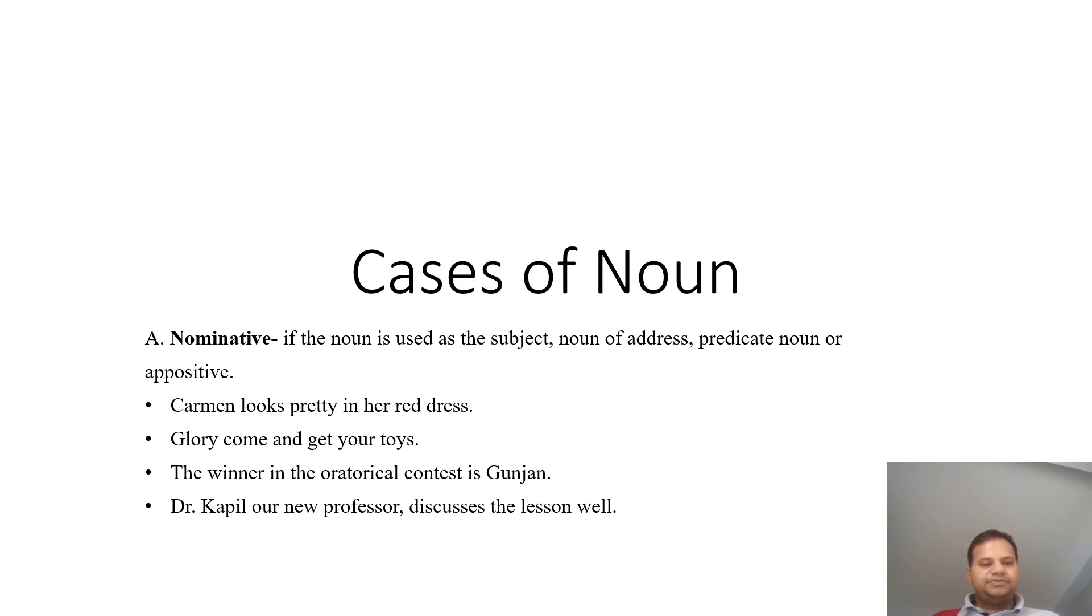There we use, for example, Carmen looks pretty in her red dress. Glory come and get your toys. The winner in the oratorical contest is Gunjan. Dr. Koppel, our new professor, discusses the lesson well.